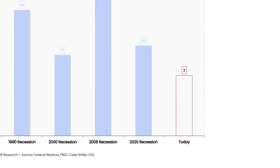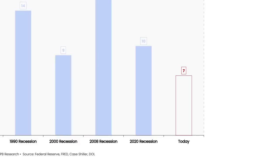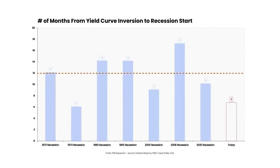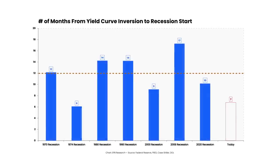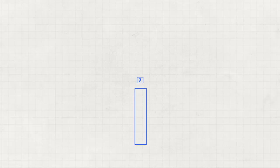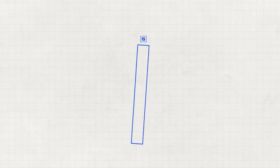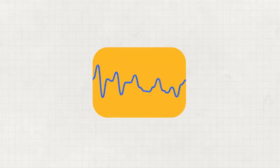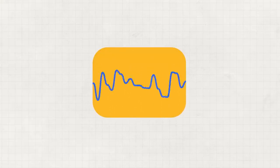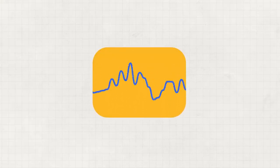Today's lag of 7 months is slightly less than the average outcome, but well within the historical range. Will this cycle be 7 months, 12 months, or 15 months? Narrowing the range of outcomes is a quest set out to be accomplished by all market forecasters, with limited success due to the inherent randomness embedded in markets and complex economic cycles.